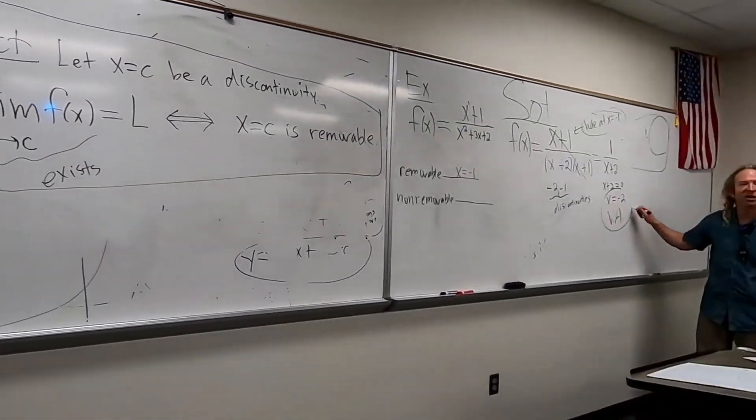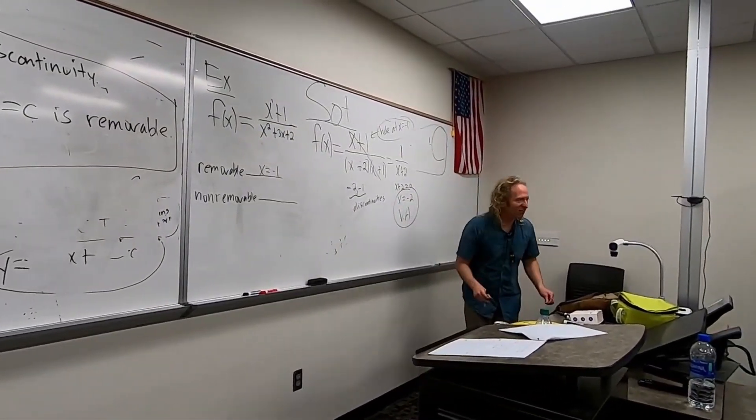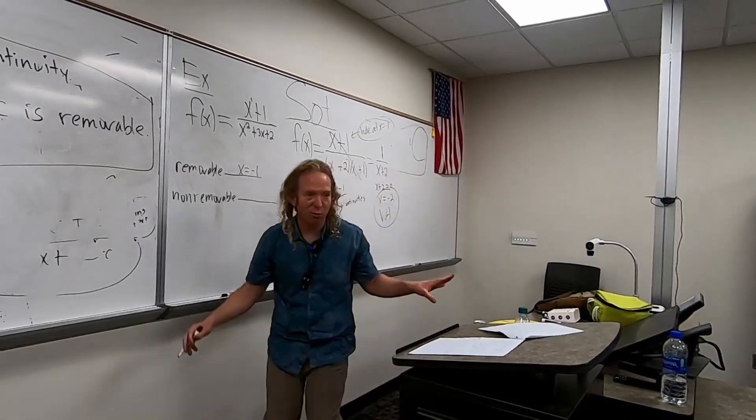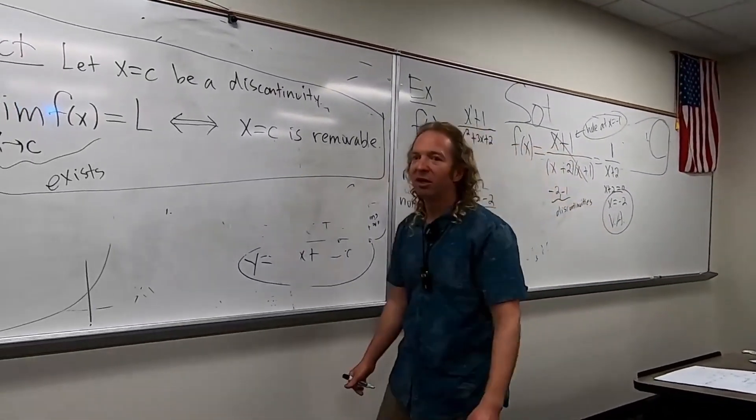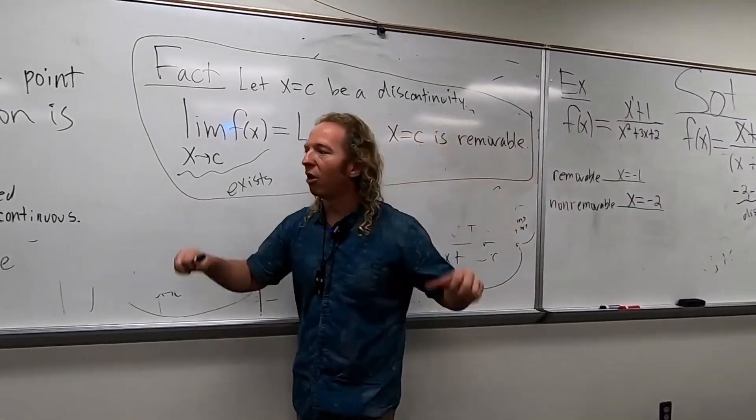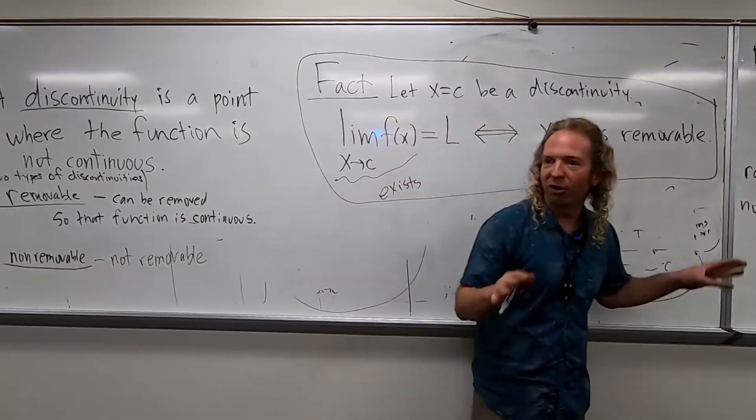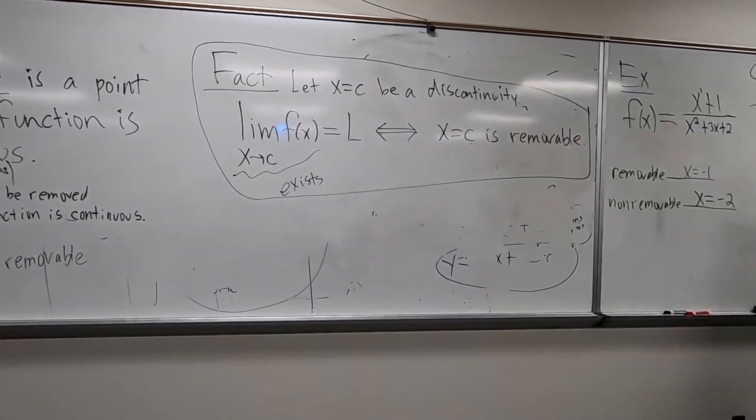Vertical asymptotes are always not removable. So I'll come over here and write that down in a minute. So holes in rational functions are always removable. Vertical asymptotes are always non-removable. So here we go. Let's go ahead and see your hands.